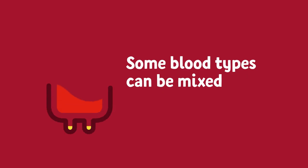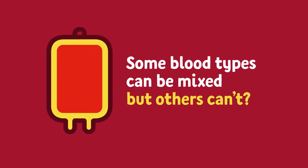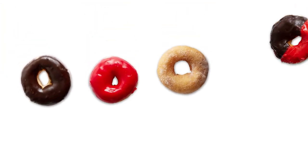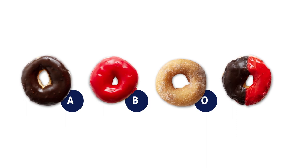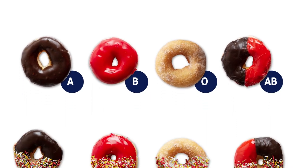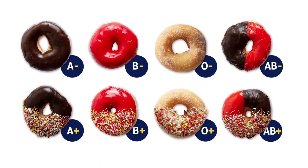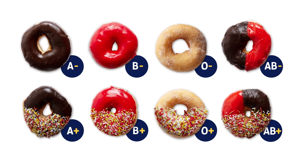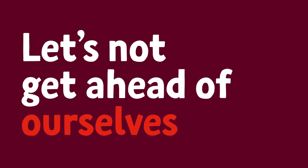Do you know why some blood types can be mixed but others can't? Our blood can be divided into four main blood groups: A, B, O and AB. Each group can either be Rhesus negative or positive, so eight in total. There are many more variants of blood types, but let's not get ahead of ourselves.